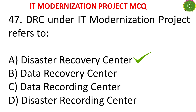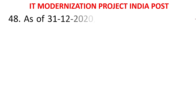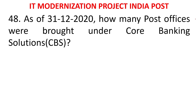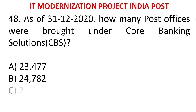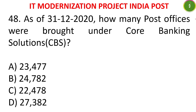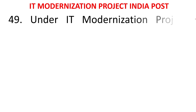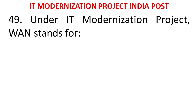MCQ 46: As of 30-12-2020, how many post offices were brought under CBS? Options: 23,477; 24,782; 22,478; or 27,382. The answer is 23,477.